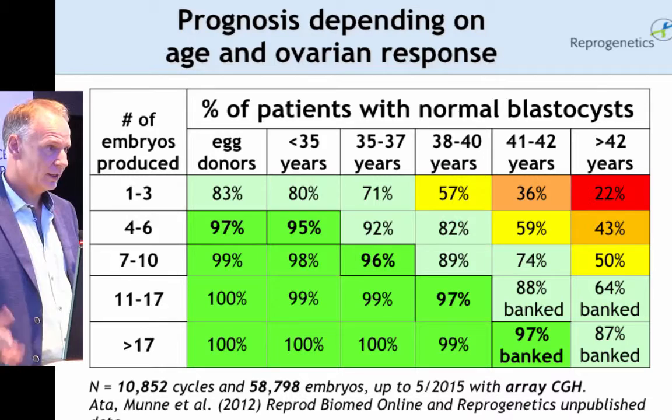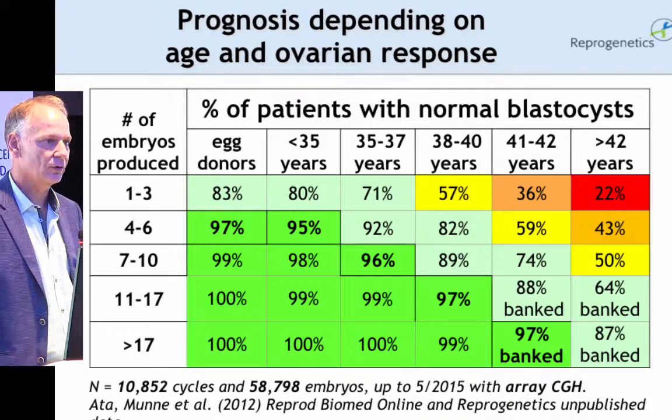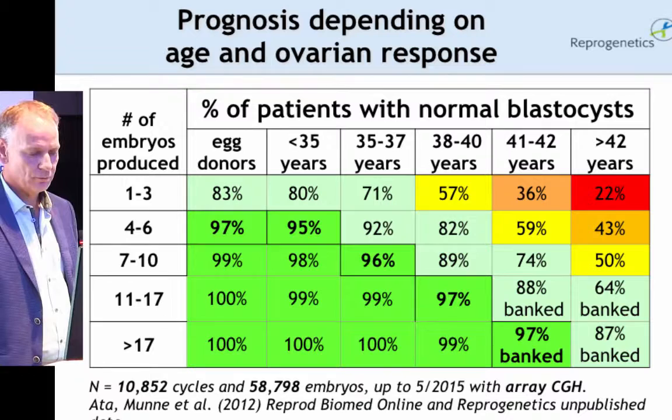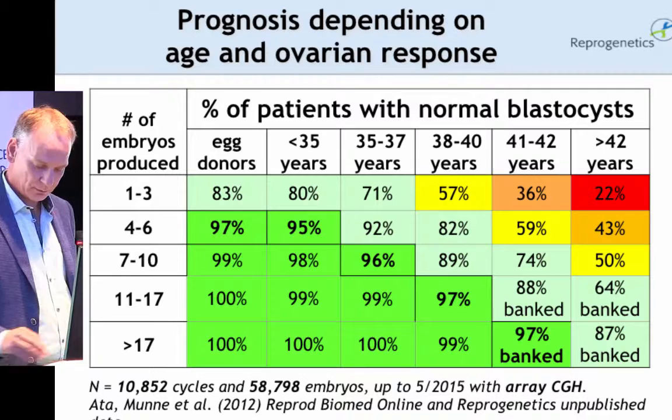Obviously, the more embryos you produce, the higher the chance that you will find a normal embryo. At a certain age, let's say 38 or more, it's going to be very difficult to find normal embryos if you produce very few. So some centers in the U.S. are doing embryo banking — you do several cycles of IVF and then just one PGD, so you could counsel patients that they could reach finding a normal embryo.